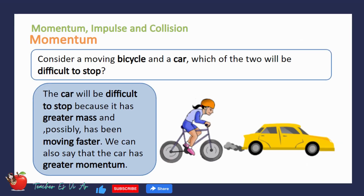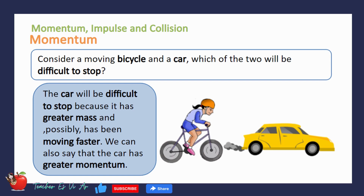Consider a moving bicycle and a car. Which of the two will be difficult to stop? Of course it is the car because it has greater mass and, possibly, has been moving faster. Moreover, we can say that the car has greater momentum. But, what is momentum?